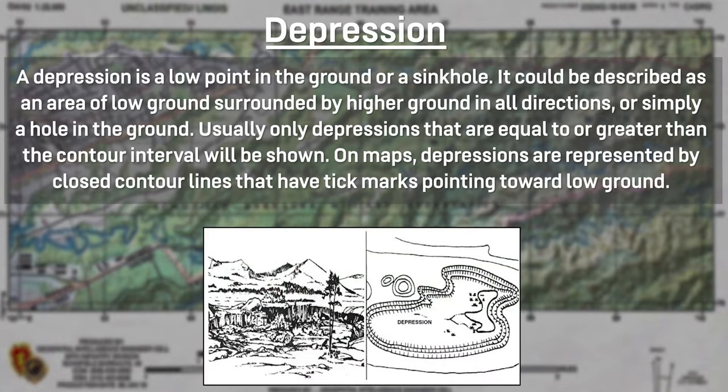A depression is a low point in the ground or a sinkhole — an area of low ground surrounded by higher ground in all directions, or simply a hole in the ground. Usually only depressions equal to or greater than the contour interval are shown. On maps, depressions are represented by closed contour lines that have tick marks pointing toward the low ground.